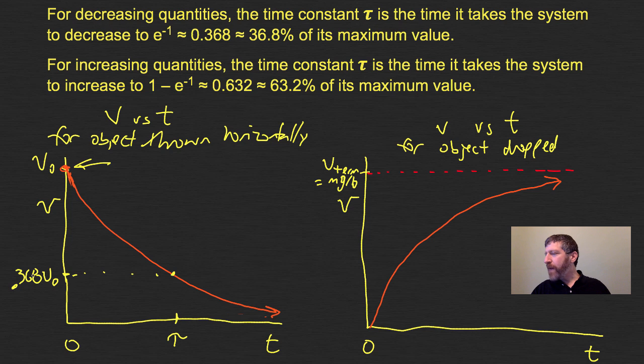So it's how much time it takes to get to 36.8% of the maximum value for decreasing quantities. When it's increasing, this value here is 0.632 of V terminal, which I'll represent as V_T. It takes about one time constant to get to that point.